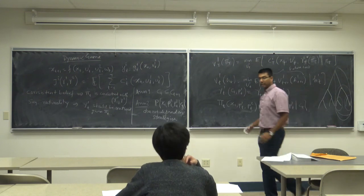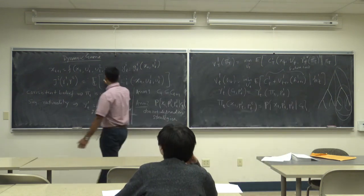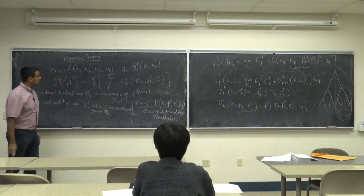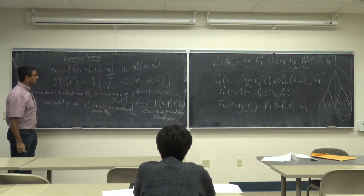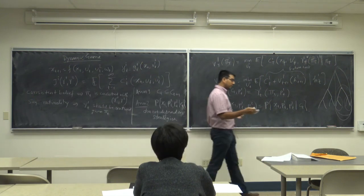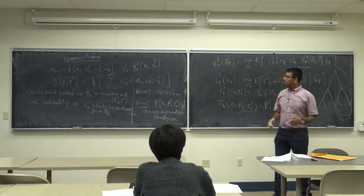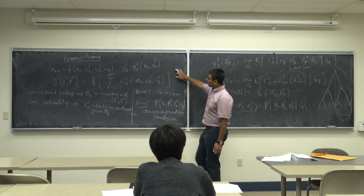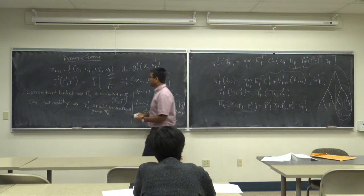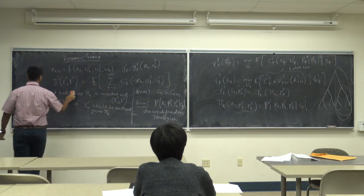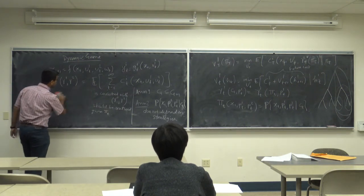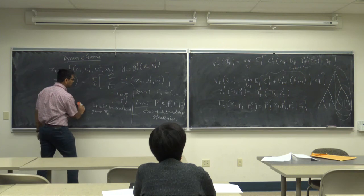There is a special class of dynamic games where T is infinity — infinite horizon games. If you want to solve it in the general setting, it is very difficult, so people have studied simpler settings, which is what we covered in the previous two classes.